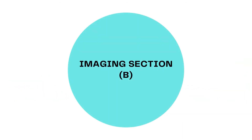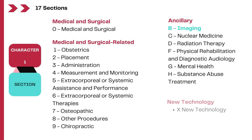The imaging section includes procedures such as radiographies, fluoroscopy, CT scans, MRIs, and ultrasounds. These are among the 17 sections in the ICD-10-PCS. Note that PET scans are coded to the nuclear medicine section and not from the imaging section.